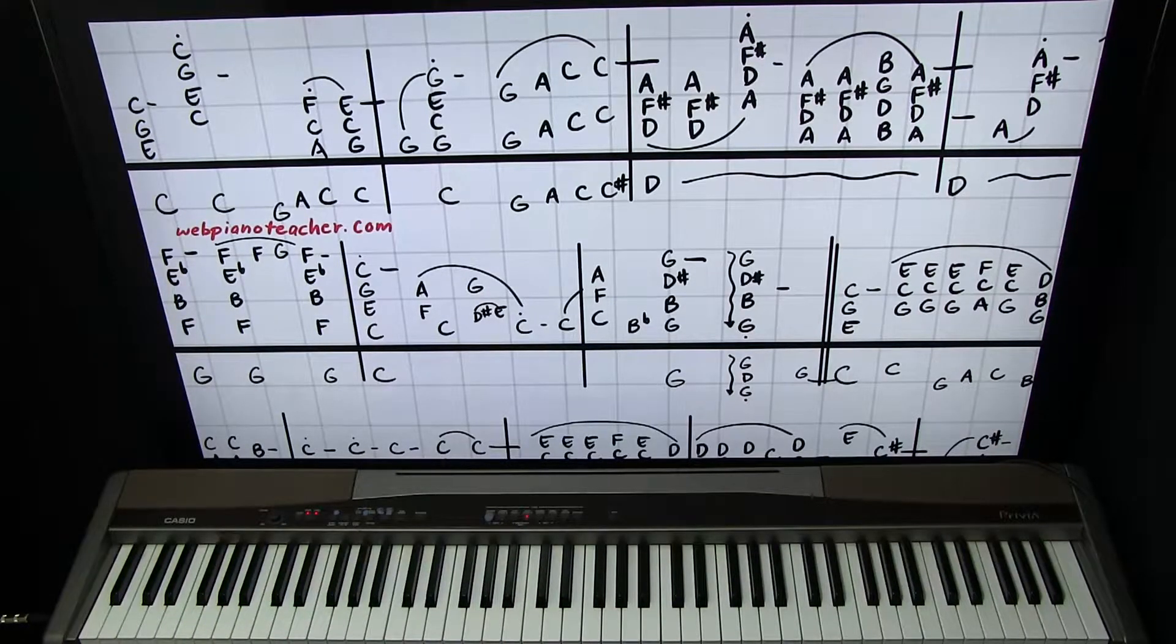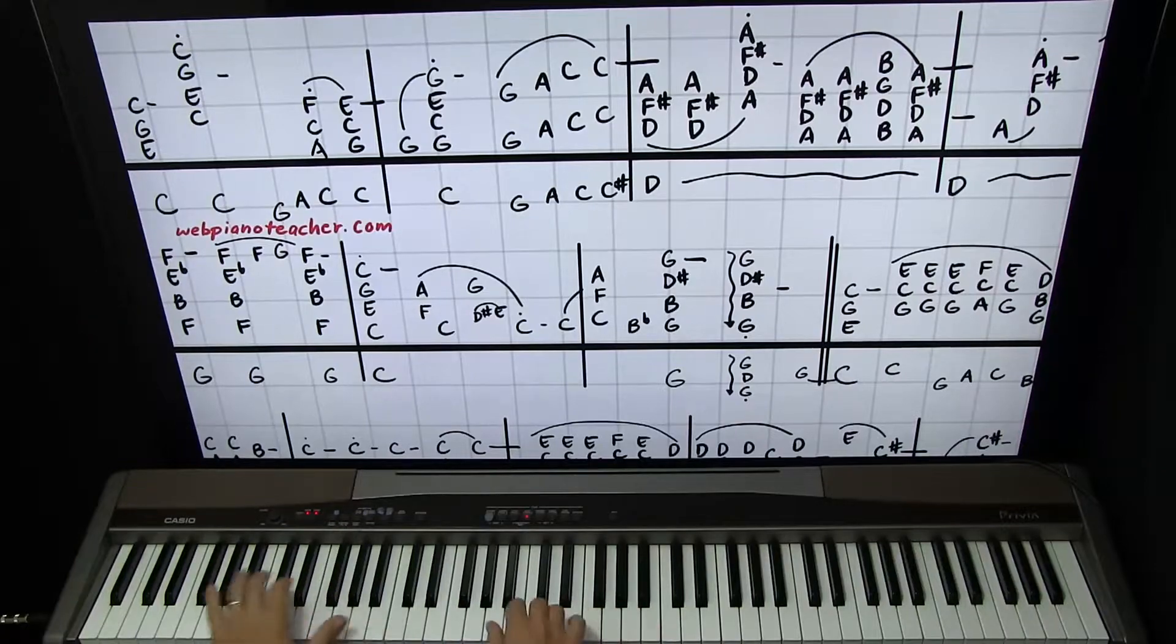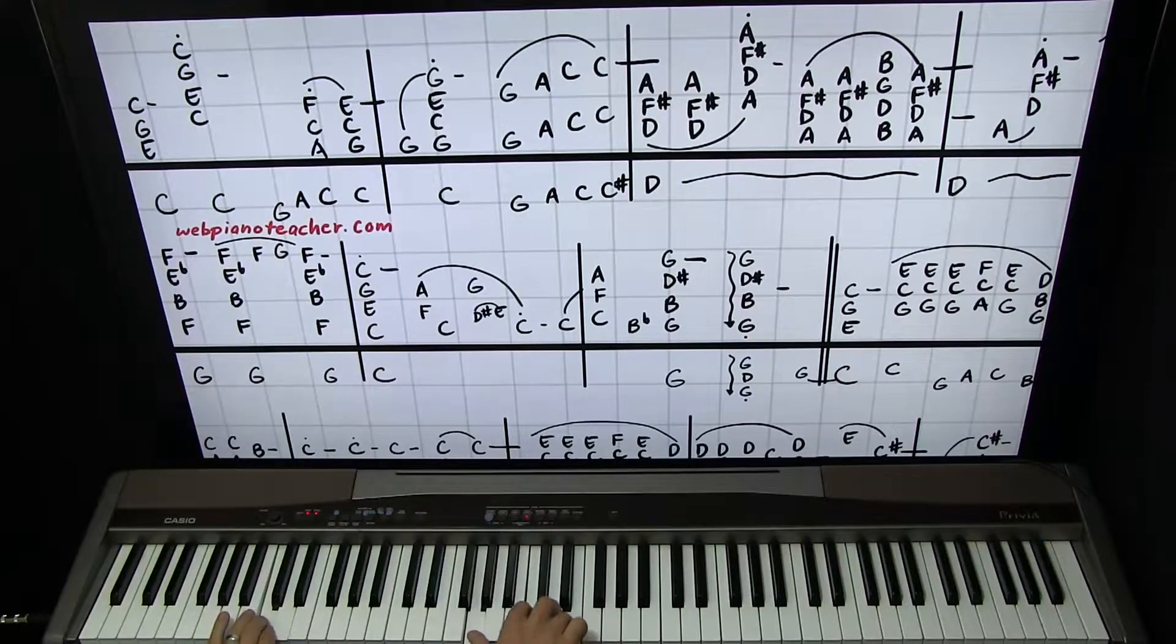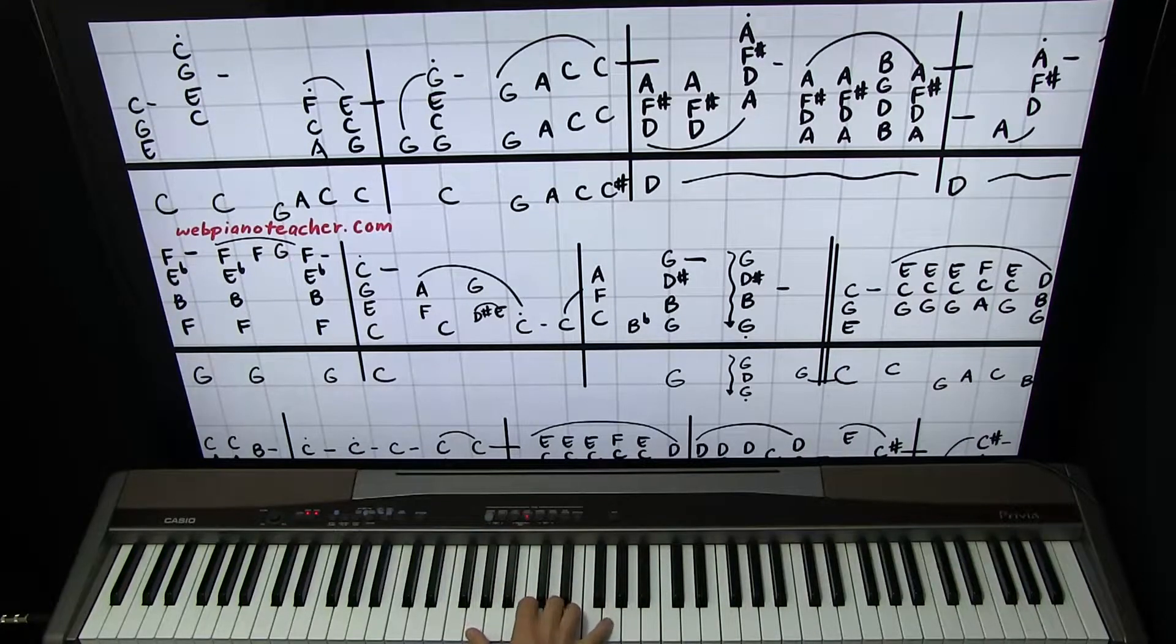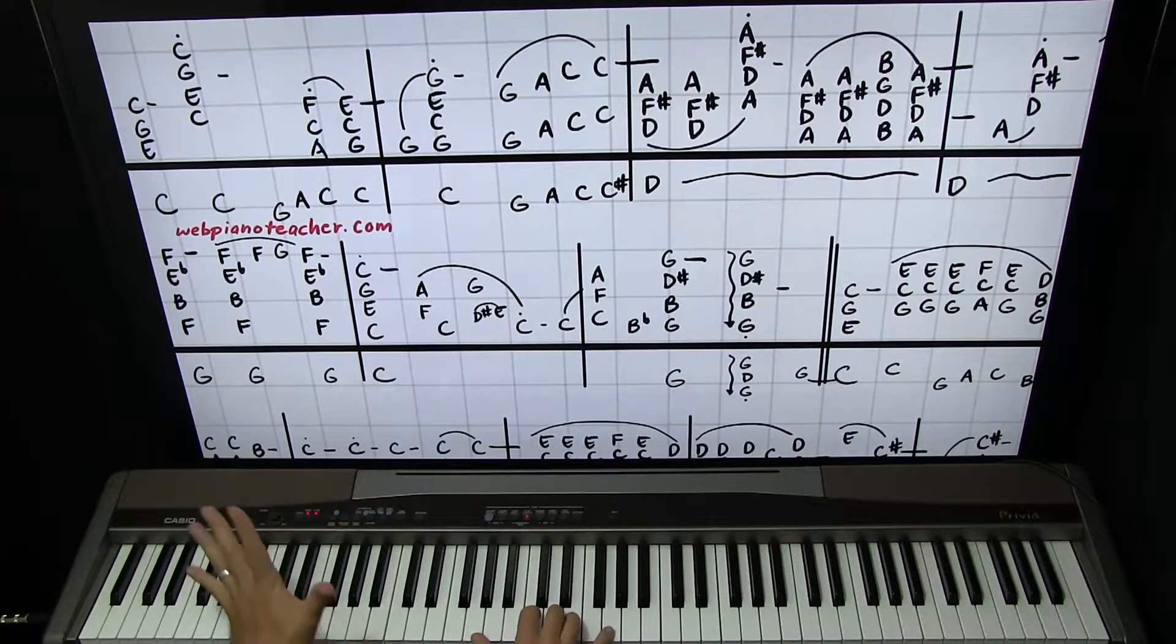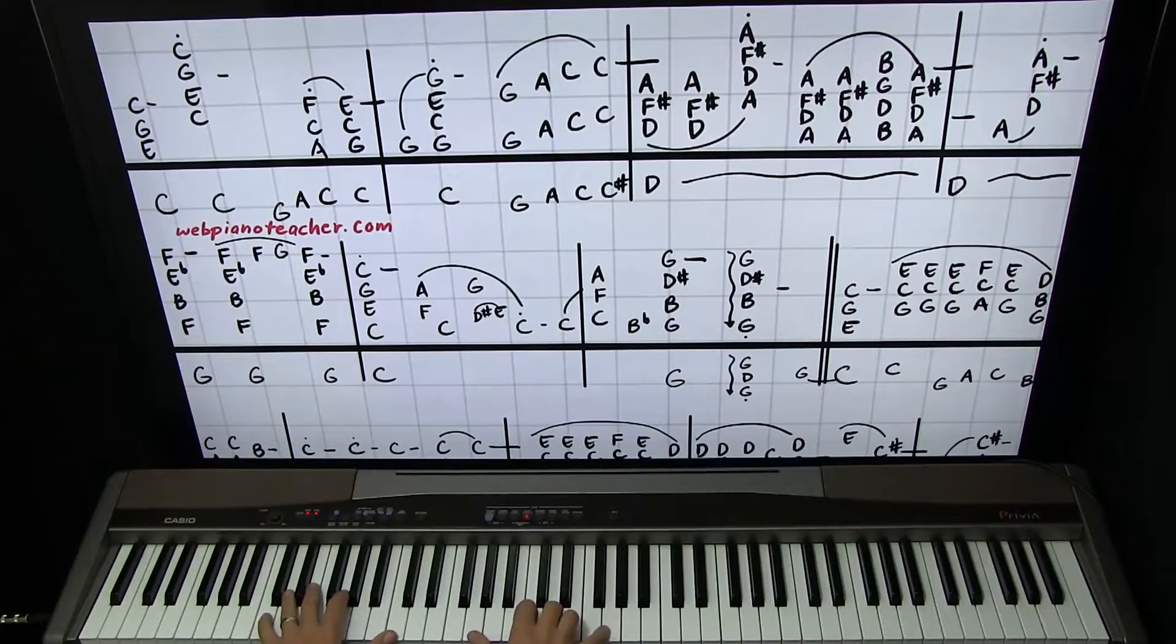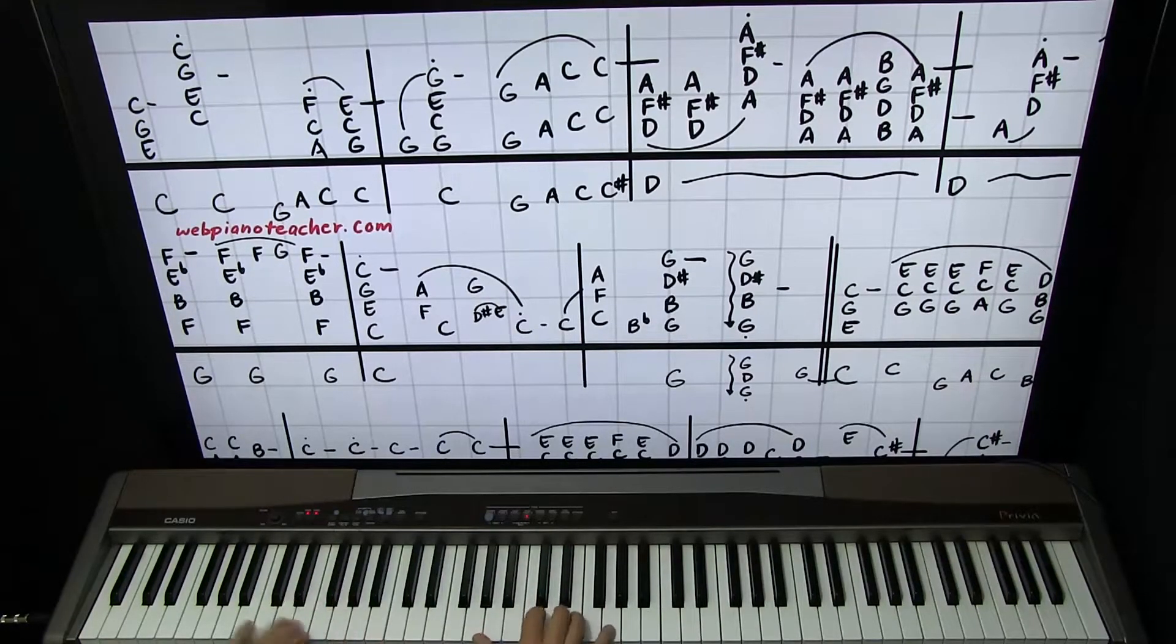Those spaces are very important, so make sure you. As we're holding that over to the next measure. And 2. We have G on the thumb again. And then we have G, C, E, G. Left hand with a C octave again. So. And then.